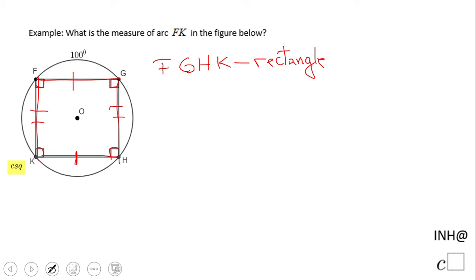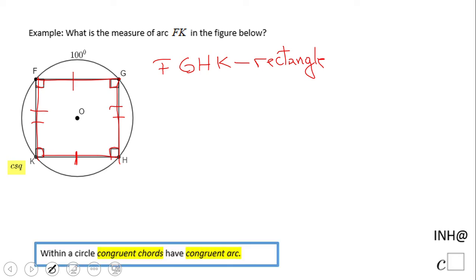So what now? Look at here. Congruent chords have congruent arcs. So remember what I said: FG congruent to KH because FGHK is a rectangle. Which means arc FG equals the measure of arc KH. I mean, we can write the congruence statement for arcs, which means this one is also 100.